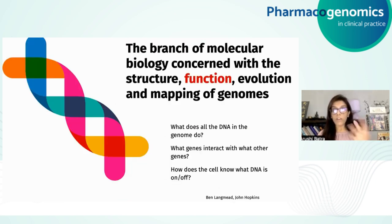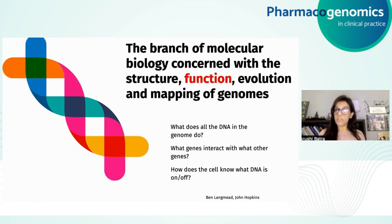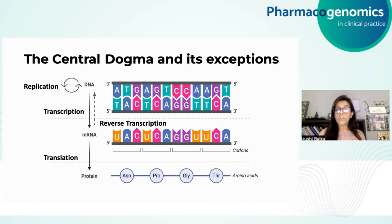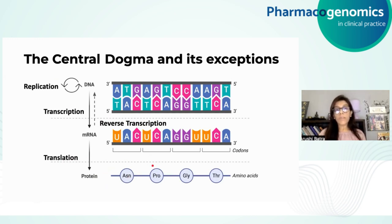With respect to function, after addressing structure and mapping, we want to know what all the DNA in the genome does, what genes interact with what other genes, and how the cell knows what DNA is supposed to be turned on or off. To answer these questions, we need to understand the central dogma. The central dogma, given by Frederick Sanger, states that DNA is transcribed into mRNA through transcription, which is then converted into a protein through translation. Proteins are the ultimate effectors of gene action. The fundamental physical and functional units of inheritance are genes, with an estimated 20,000 to 30,000 genes representing around 2% of the human genome.